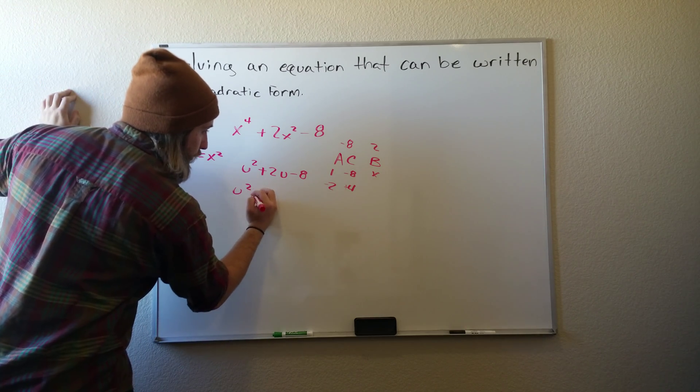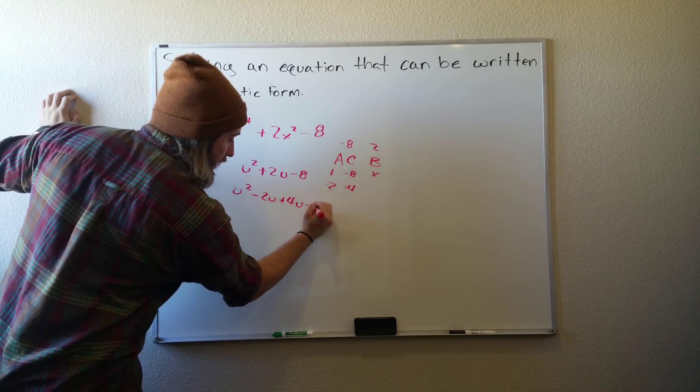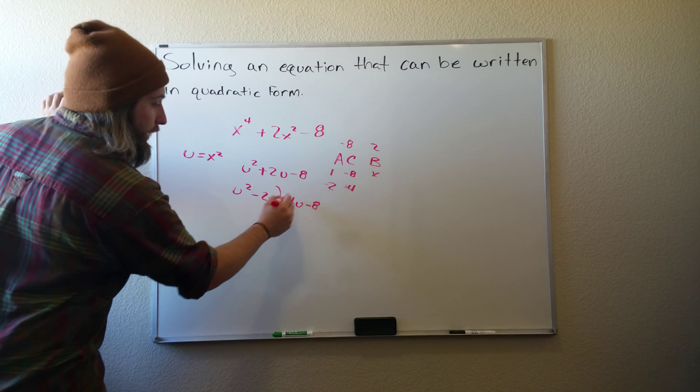So we'll use u squared minus 2u plus 4u minus 8. From there we'll just factor by grouping.